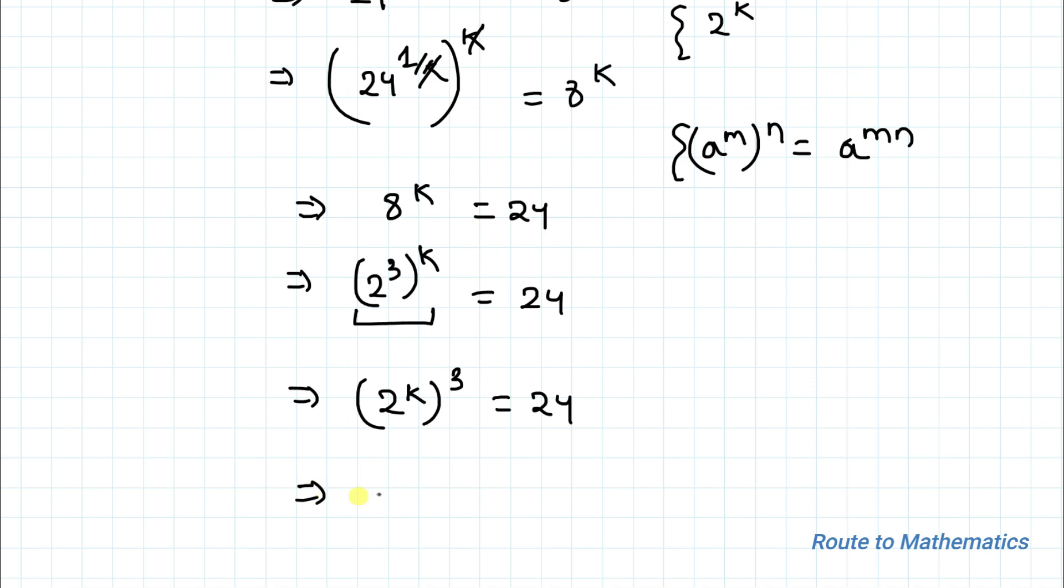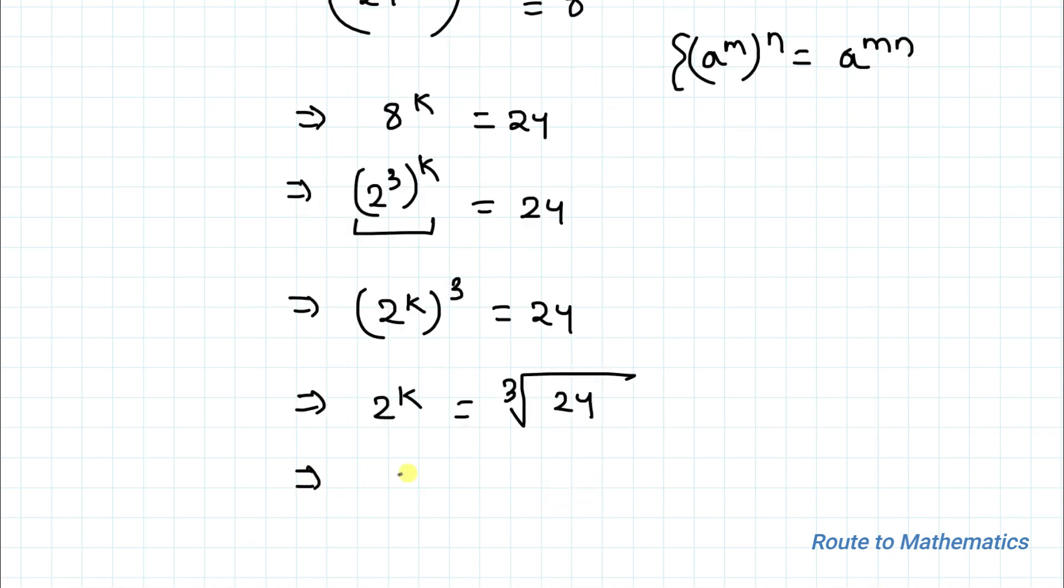Now taking cube root on both sides, we have 2 to the power k equals to cube root of 24. This implies 2 to the power k equals to cube root of 8 multiplied with 3, which is nothing but 2 multiplied with cube root of 3. This is our answer.